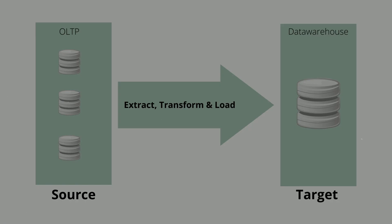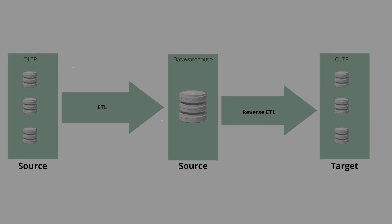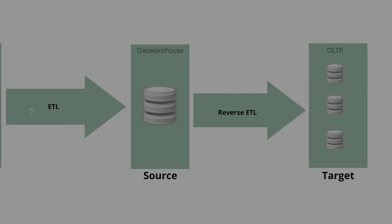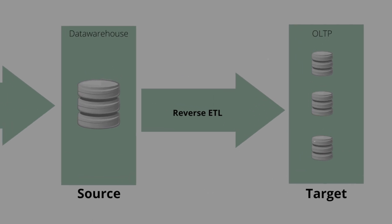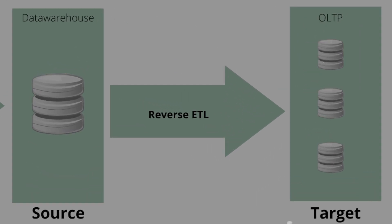In the reverse ETL process, a data warehouse is used as a source, and the data is moved into OLTP systems like CRMs or any SaaS applications, etc.